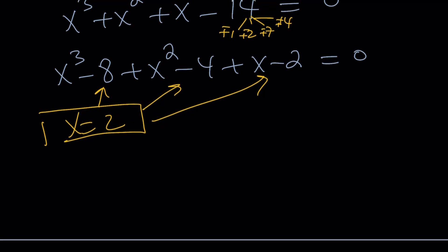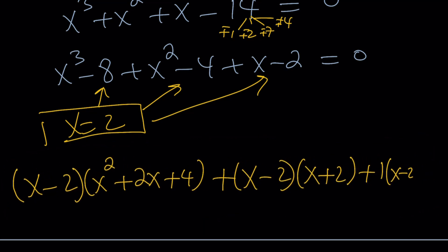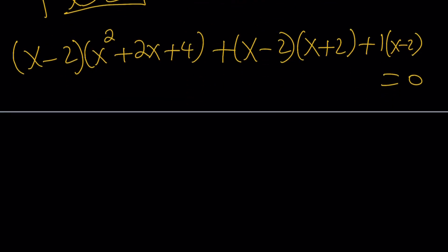Now, x cubed minus 8 is factorable. So, I can write it as x minus 2 times x squared plus 2x plus 4. This is called difference of 2 cubes. x squared minus 4 is difference of 2 squares. And x minus 2 is just 1 times x minus 2. Now, this expression is equal to 0. Remember that. Let's go ahead and factor out x minus 2.